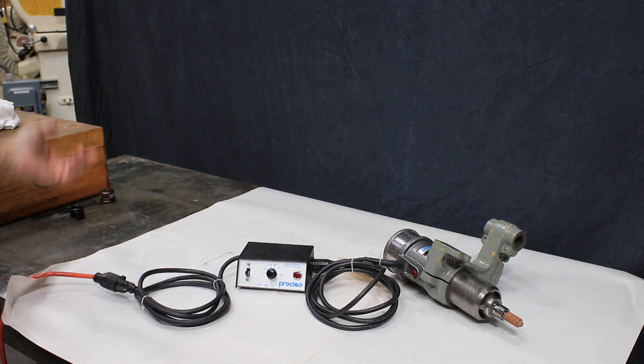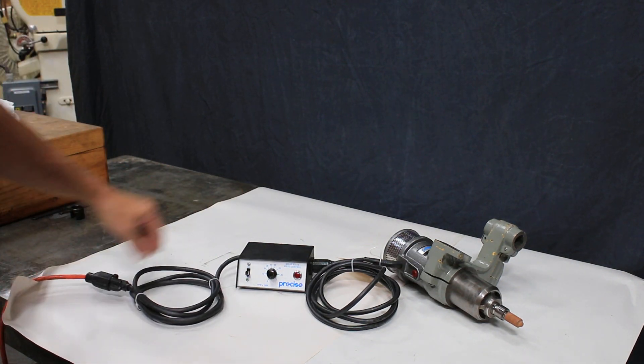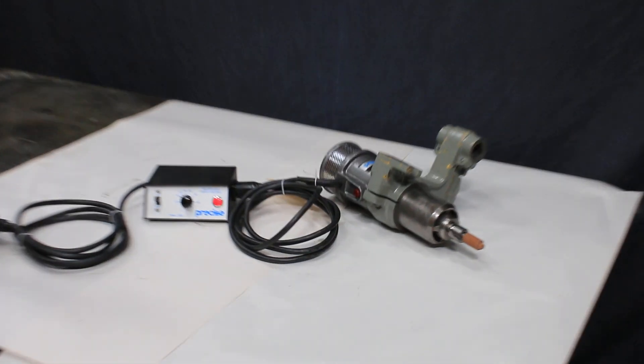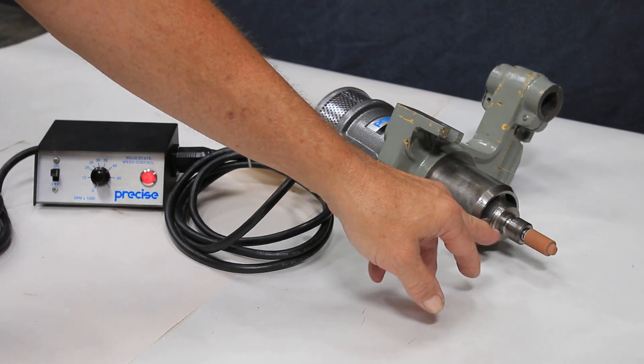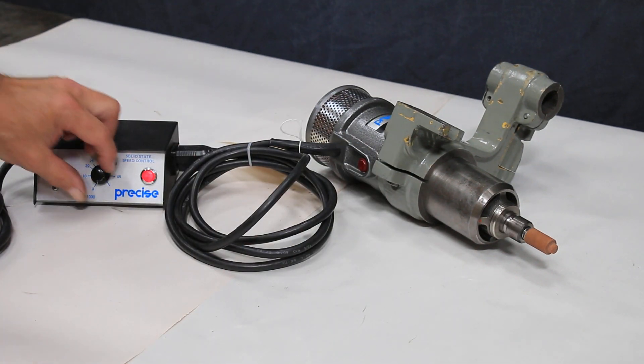We're going to turn this on. It's a regular 110 volts. You get your little red light there and you have a collet type of system here for a quarter inch or .250 collet.